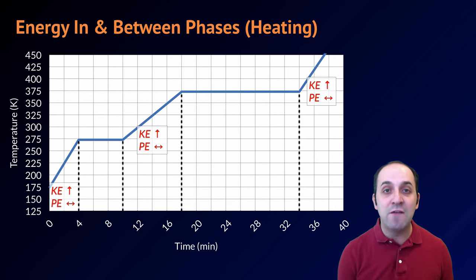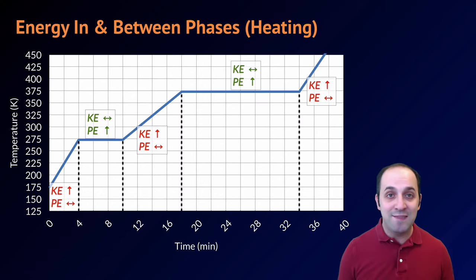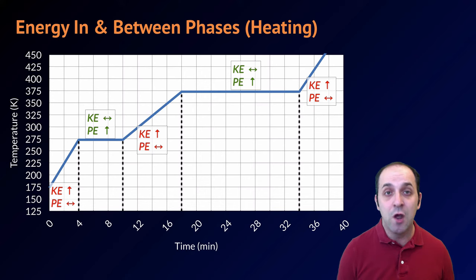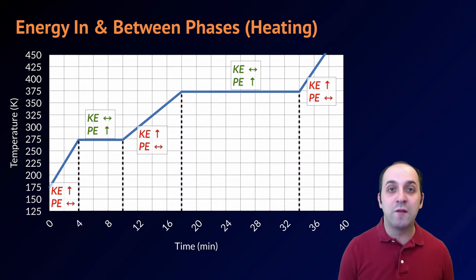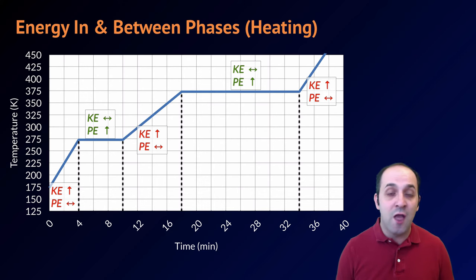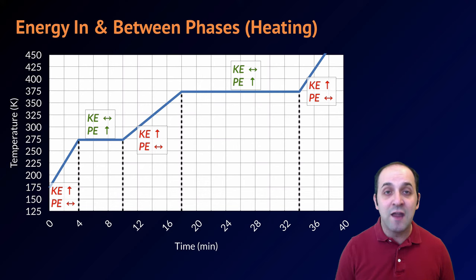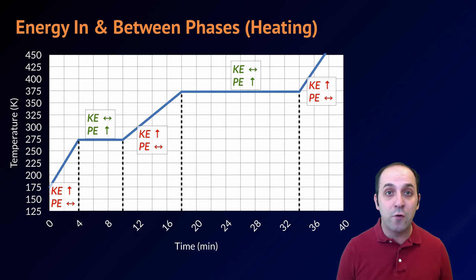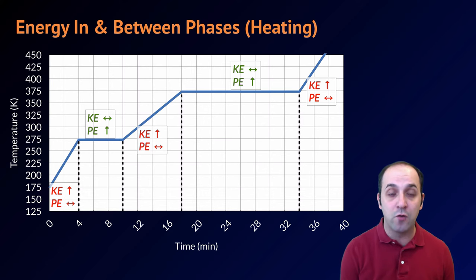If you consider the energetics involved in the two phase changes shown on this diagram, you can see that at these points our kinetic energy is remaining the same — we know this because the temperature isn't changing — but we're still investing energy. That energy goes into increasing the particles' overall potential energy. It requires an investment of energy during each phase change in order to change those particle arrangements and affect their potential energy.